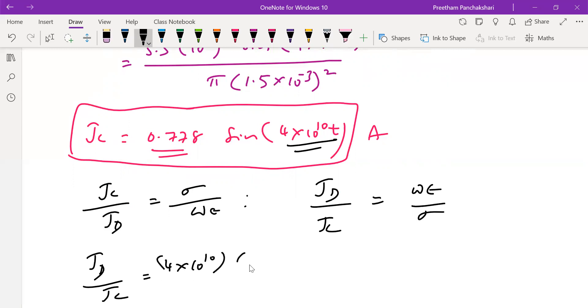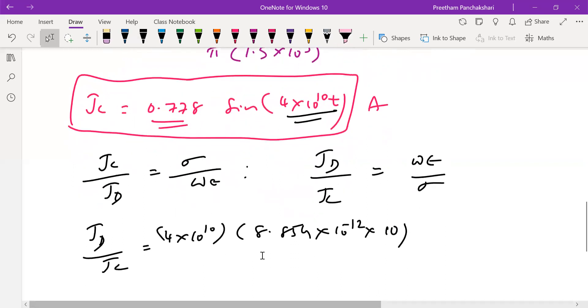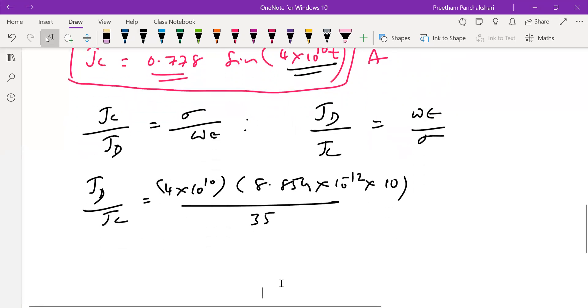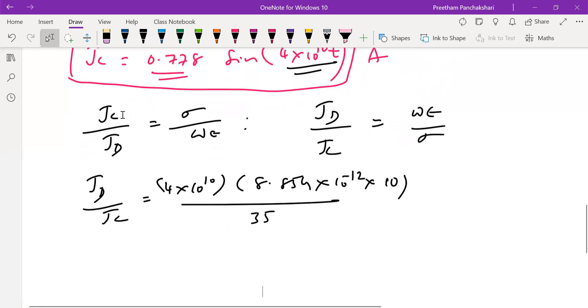Epsilon is ε₀ times εr, that's 8.854×10^-12, and εr is 10 given in the numerical itself. Sigma is 35 mhos per meter.